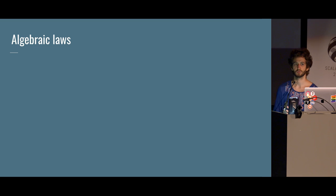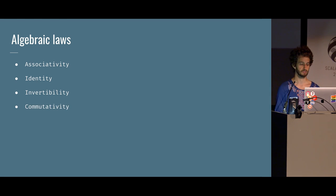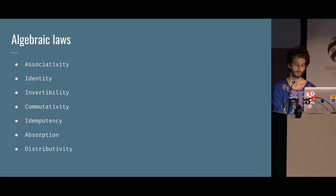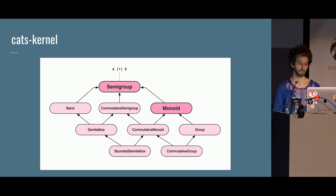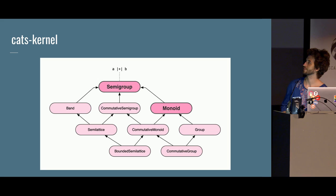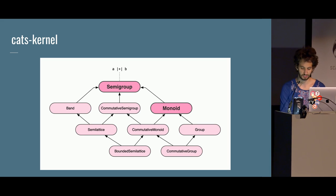Speaking of laws, there are different kinds. We saw associativity and identity, but there's also invertibility, commutativity (A combined with B equals B combined with A), idempotency (familiar from REST APIs), absorption, and distributivity. By using combinations of these, we get different algebraic structures. If you look at the Cats kernel diagram, there's a bunch of arrows — but after this talk I hope you'll look at it and think: this is not hard. It has some weird names like bounded semilattice, but we'll get to it.